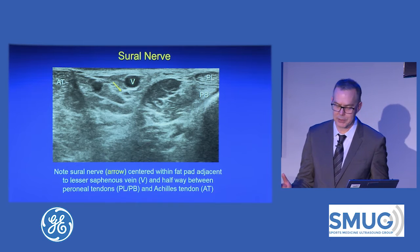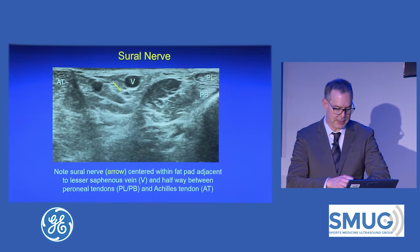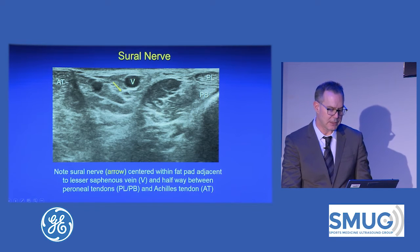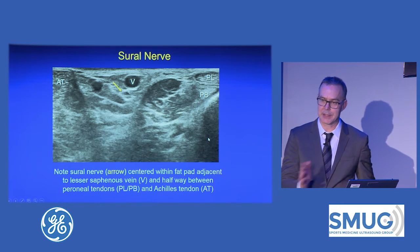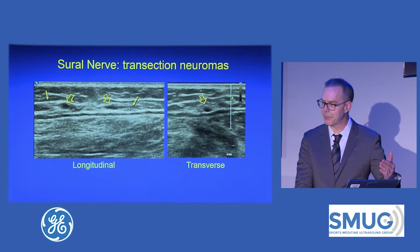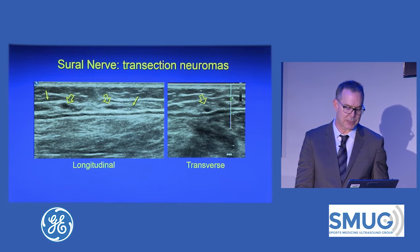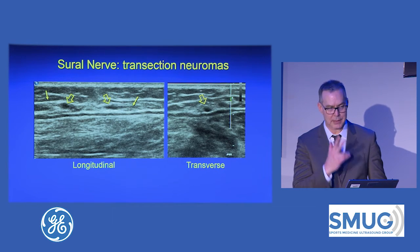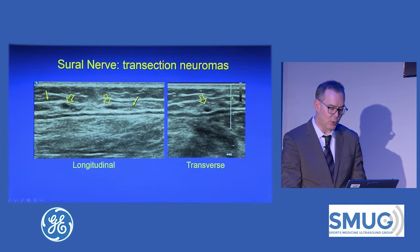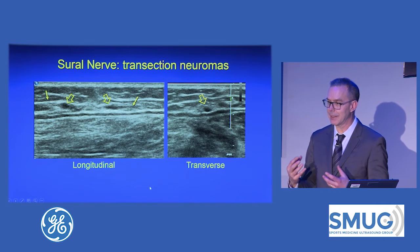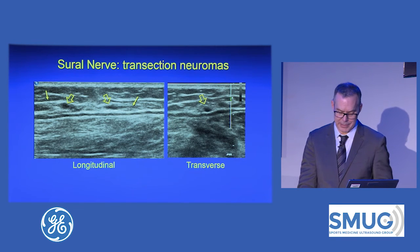Moving on, I'll mention the sural nerve. This nerve is easy to see: look halfway between the peroneal tendons and the Achilles tendon at the ankle — it's right in the middle of the fat pad, next to the lesser saphenous vein. Very easy to find at that level; you can track up or down. The only abnormality I have here is a transection. When you have a cut nerve, the ends tend to retract and form a neuroma — a normal response of the nerve trying to regenerate, which is why it looks hypoechoic and enlarged at the terminal stumps.